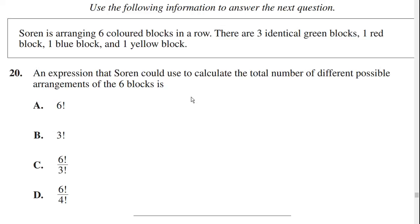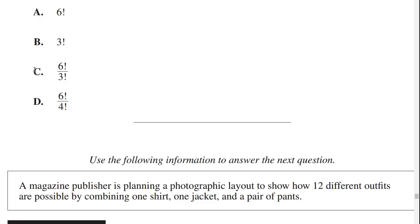So this is where we use the fundamental counting principle. We have six colored blocks in a row, so by default that's six factorial ways that they could be arranged. However, we notice that the green blocks are all the same — they're identical. So to take this into account, we have to divide by three factorial. So the answer is six factorial divided by three factorial.